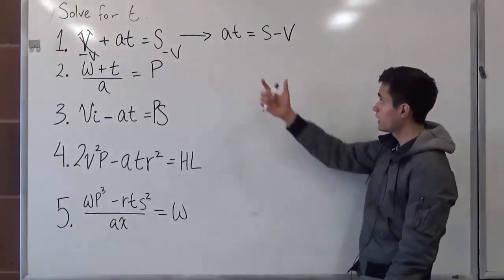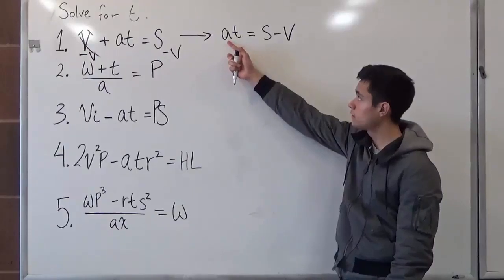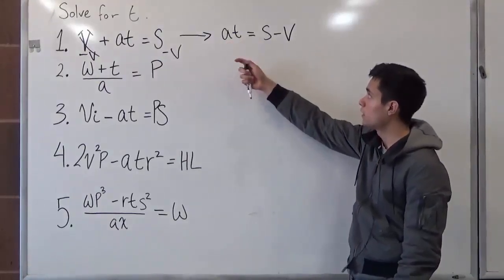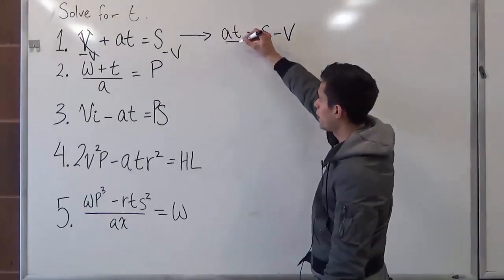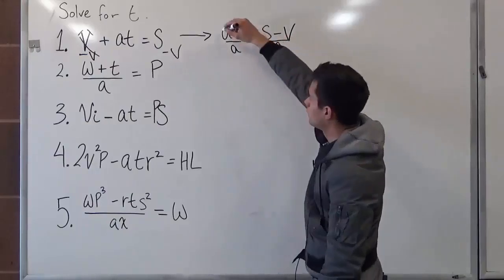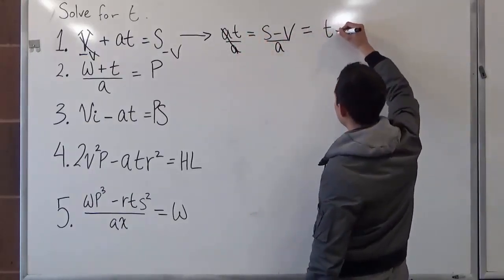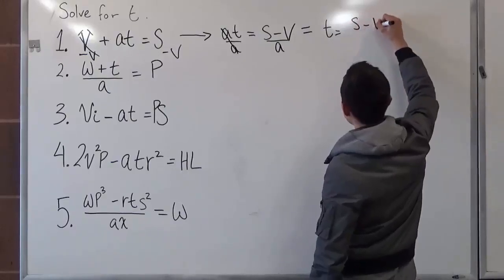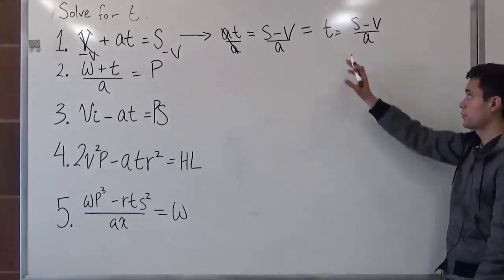So now that we have this portion, we still have a, which is being multiplied by t. We want to get t by itself. Always keep that in mind. So we divide it by a, divided by a. This cancels out. So now we're just left with t is equal to s minus v over a. So the first problem is done.